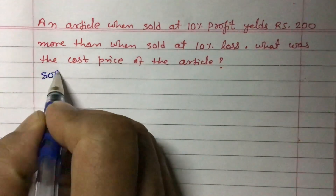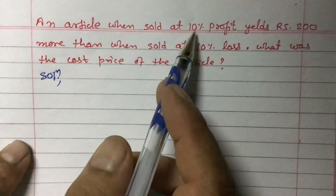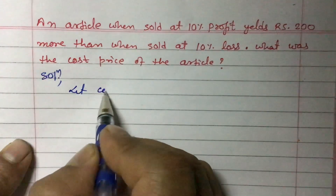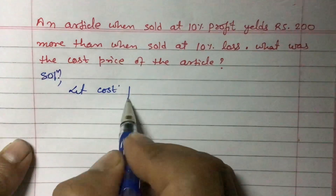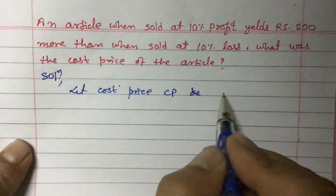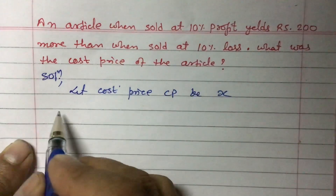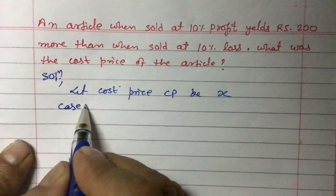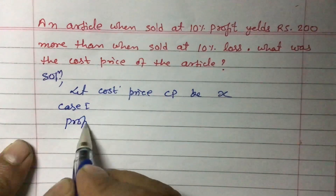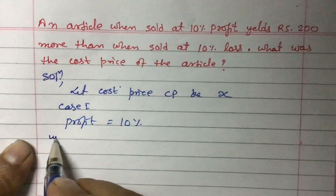In the solution, we are given 10% profit. First of all, let us suppose the cost price CP equals X. Now, Case 1: in the first case we have profit equals 10%.